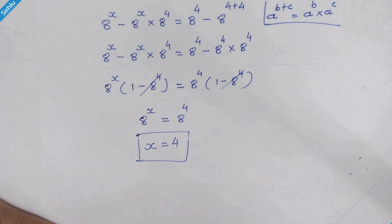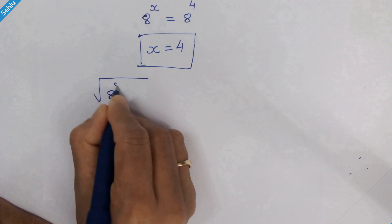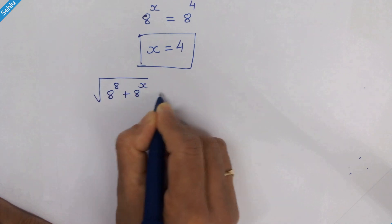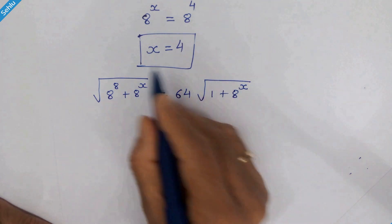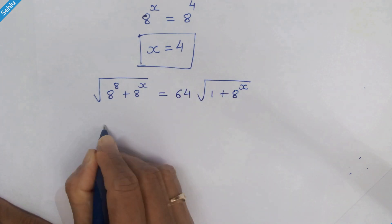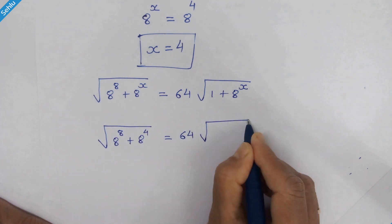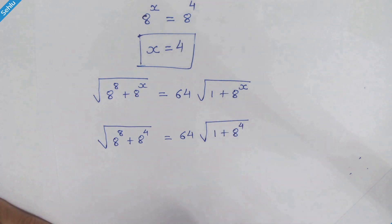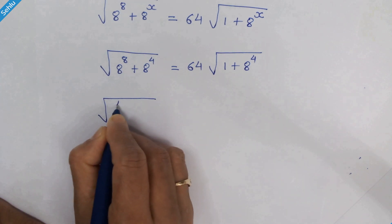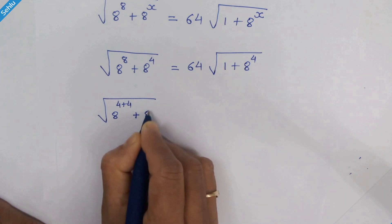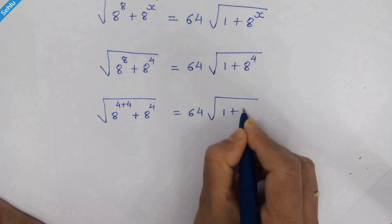Now let's verify our answer. Our question is square root of 8 raised to 8 plus 8 raised to x is equal to 64 times square root of 1 plus 8 raised to x. Putting x equal to 4, we can write 8 raised to 4 plus 4 plus 8 raised to 4 is equal to 64 times square root of 1 plus 8 raised to 4.